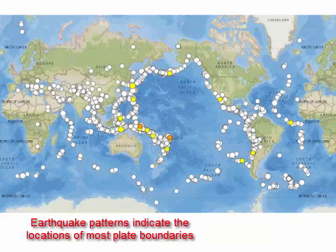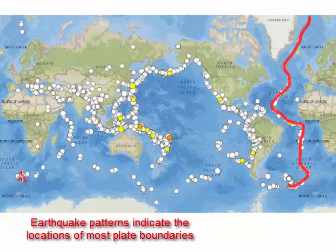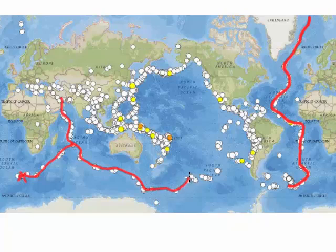We'll start in the Atlantic Ocean — we can connect the dots to identify the approximate location of the plate boundary. Now you try: starting halfway between South Africa and Antarctica and moving east, where is the plate boundary? You might have drawn it like this, and then wondered where to go from there — you could either continue northward or follow the line of earthquakes to the southeast. Both lines represent plate boundaries: one separating Africa and South America or North America and Europe, and another separating Africa and Antarctica or Australia and Antarctica.